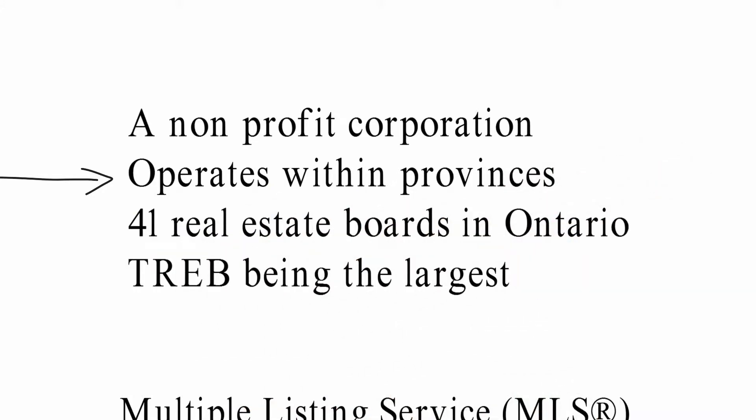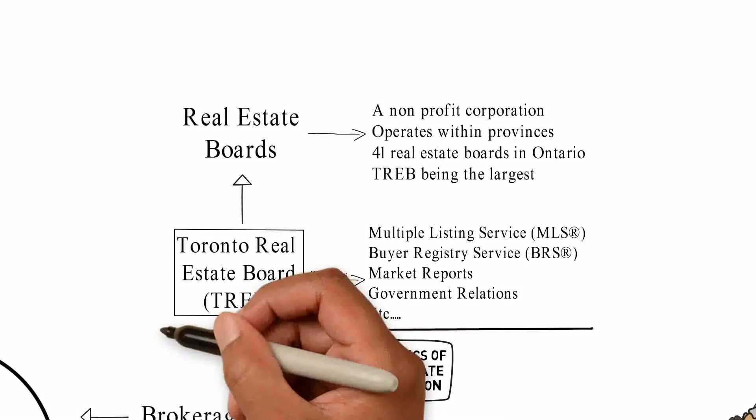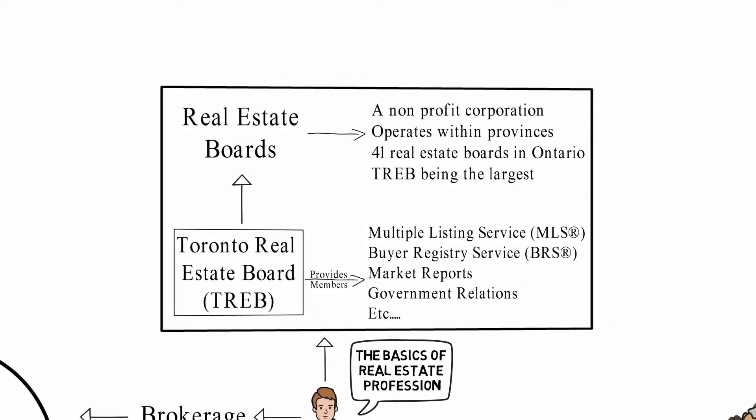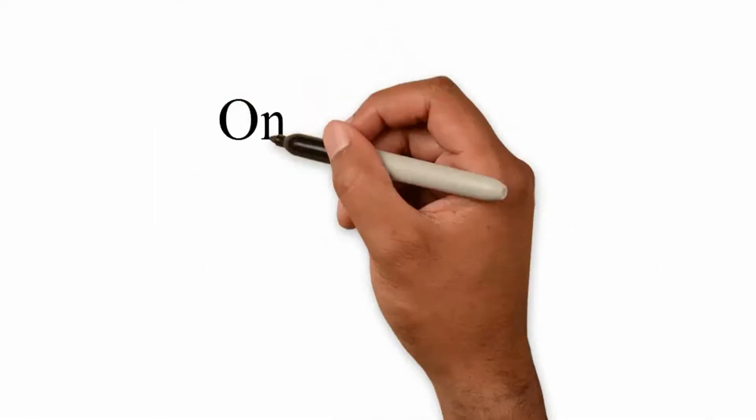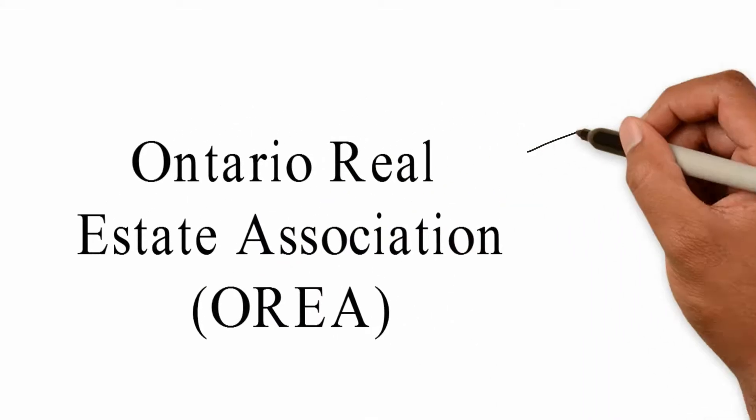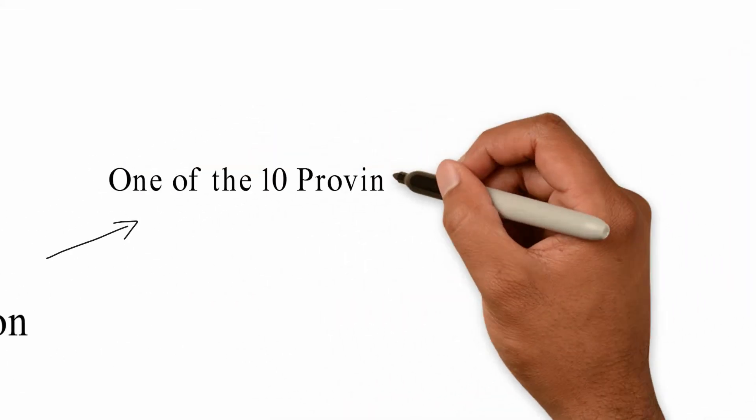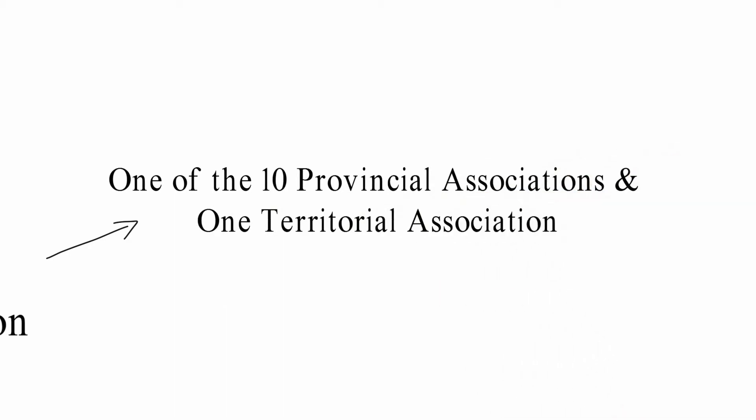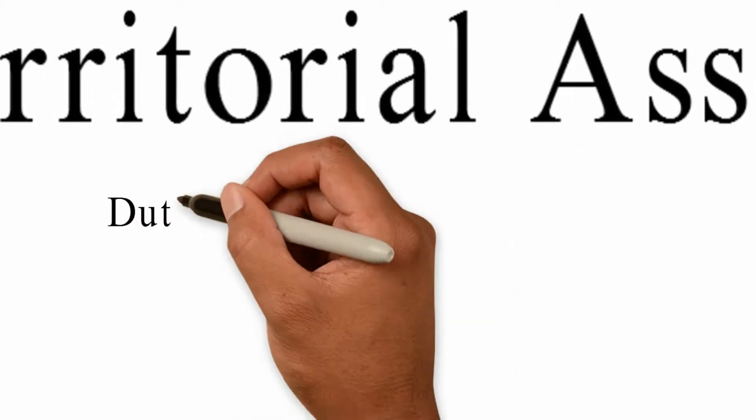Now above real estate boards, we have the Ontario Real Estate Association, OREA. OREA is one of the 10 provincial associations and one territorial association.